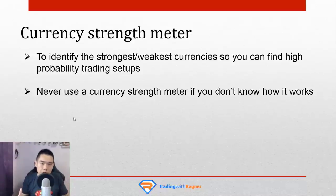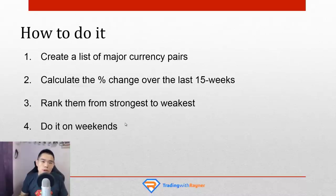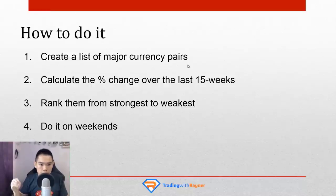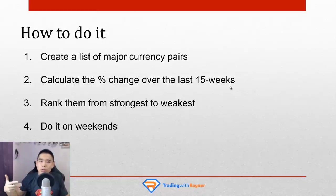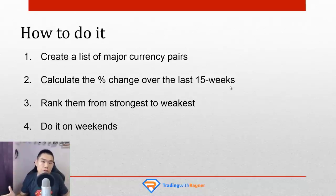Regardless of whether you're using a currency strength meter or any random indicator, you must understand how it works first. So, how do you create your own currency strength meter? It's simple. Number one: create a list of major currency pairs. Number two: calculate the percentage change in price over the last 15 weeks. Why 15 weeks? According to numerous academic research, momentum in the market tends to persist based on a lookback period anywhere between the last 3 to 12 months. So if a market has been moving higher over the last 3 months, it tends to continue moving higher.